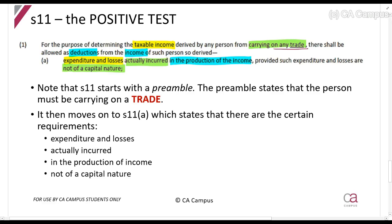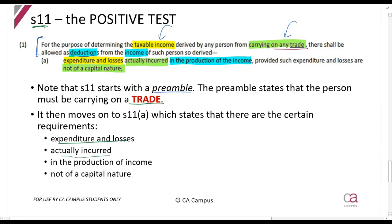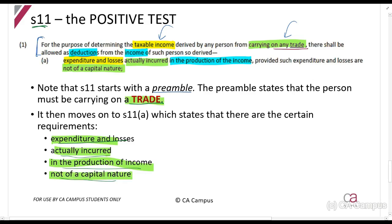That first sentence in section 11 is called the preamble — it means: if you are calculating taxable income and you are carrying on a trade, you can claim a deduction. This preamble applies to section 11b, 11c, 11d, 11e, and so on, as section 11 covers multiple deduction types. So the general deduction formula's positive test is: expenditure and losses actually incurred in the production of income, not of a capital nature — and we will now explore what each of those elements means.